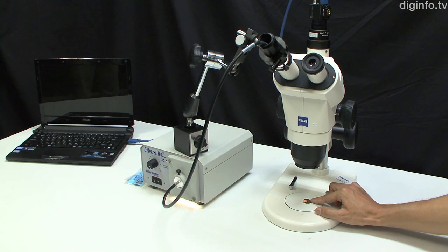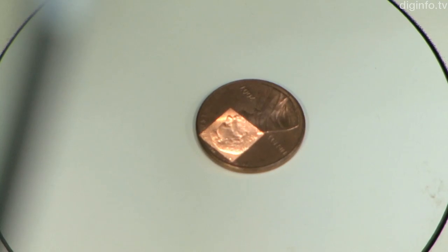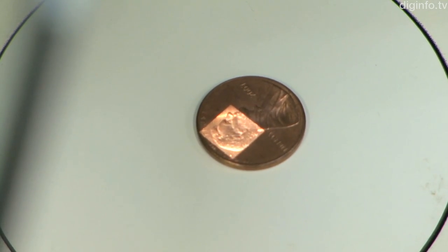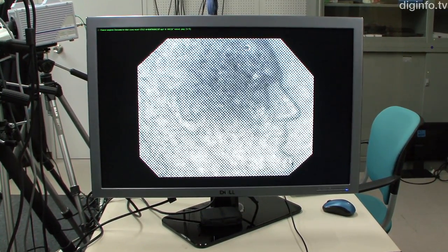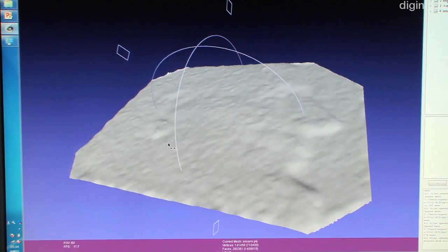One feature of this system is that as long as the patterns can be captured, it can be applied to different devices too. For example, if a stereo microscope is used to create a system that projects patterns in a very small area, it would be possible to measure shapes from microscope images.